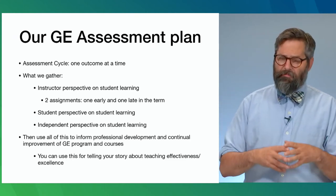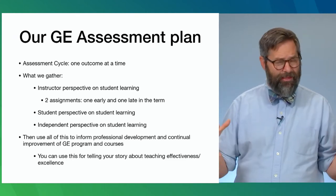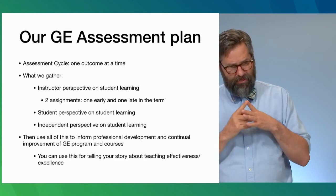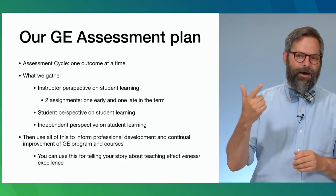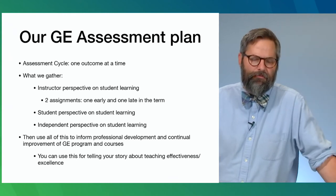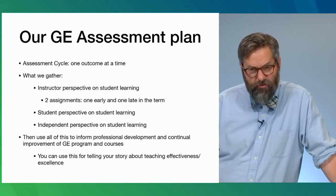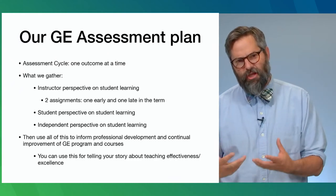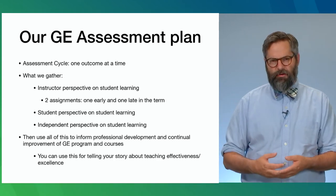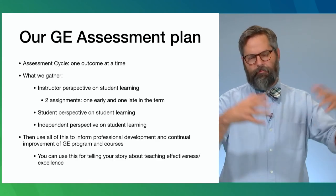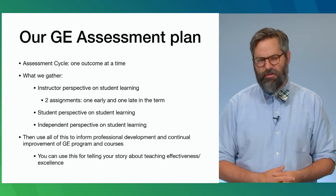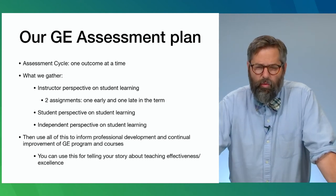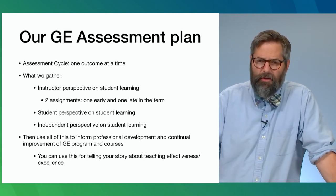We're starting off by only evaluating the lower division breadth area courses: BAI, BHU, BCA, BLS, BPS, BSS, quantitative literacy, and communicative literacy. Then finally, we have an independent perspective on student learning. The Gen Ed area committees are once a year collecting a random sample of student artifacts from a general education designation area and doing second scoring to get a sense of what people are doing, how people are scoring, and how they're understanding the rubrics.